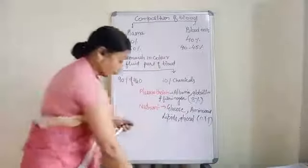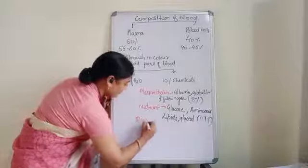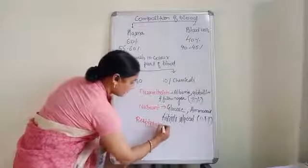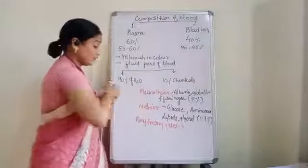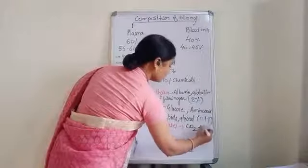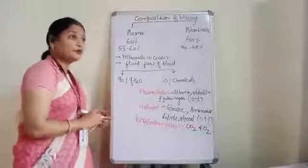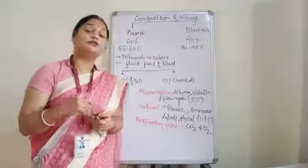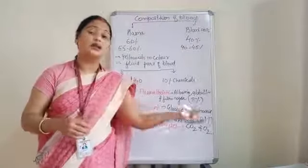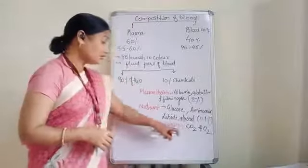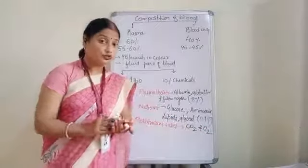Next are respiratory gases. The respiratory gases are CO2 and oxygen. Blood takes oxygen and passes it to different tissues and cells, then takes CO2 from there and passes it back to the lungs so it can come out. So CO2 and O2 are present in the plasma.